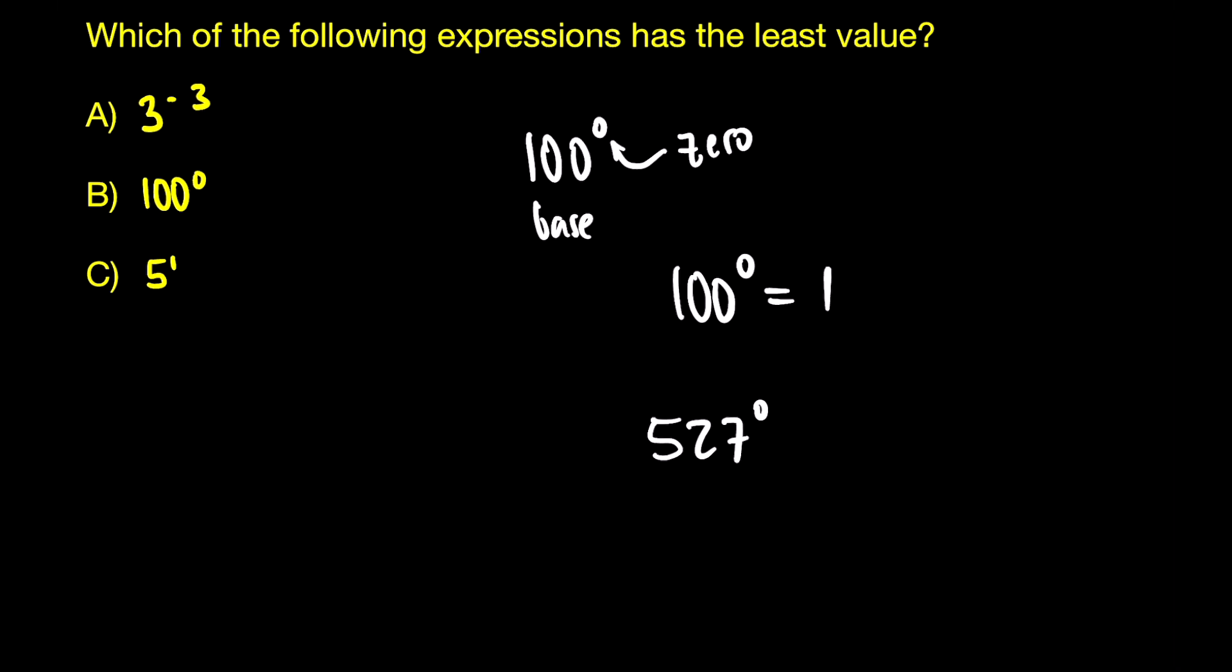If you have 527 raised to the power of 0, it's also 1. If you have 59 raised to the power of 0, it's also 1. This is a rule that you just have to remember.